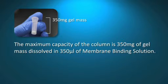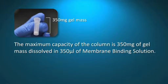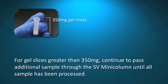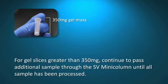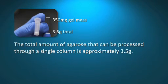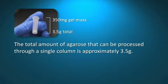The maximum capacity of the column is 350 milligrams of gel mass dissolved in 350 microliters of membrane binding solution. For gel slices greater than 350 milligrams, continue to pass additional sample through the SV mini column until all sample has been processed. The total amount of agarose that can be processed through a single column is approximately 3.5 grams.